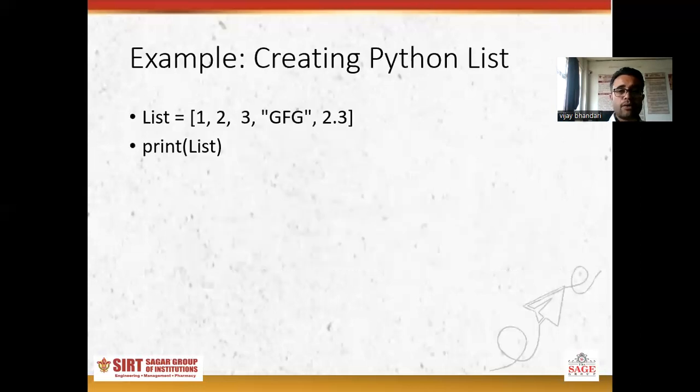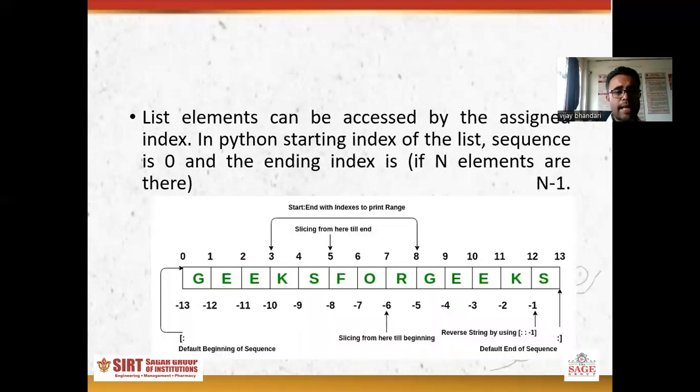For example, creating Python list. Here I am giving a variable where I am storing all the elements in the form of array. So 1, 2, 3 and GFG is a character which is imported by the commas, inverted commas. GFG is a string. Python will print all the lists. So here you can see this. If you check the type of the list, it will give you the result of the property.